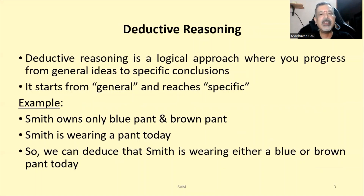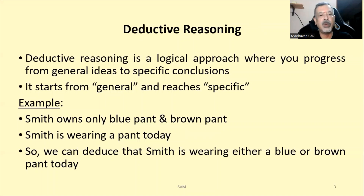Deductive reasoning is a logical approach where you progress from general ideas to specific conclusions — just the opposite of inductive reasoning. In inductive reasoning you start from specific and reach general; in deductive reasoning you start from general and reach specific. For example, a person named Smith owns only two pants: one blue and one brown. On a particular day, someone observes Smith wearing a pant, so we can always deduce that Smith is wearing either a blue or a brown pant — that is deductive reasoning.